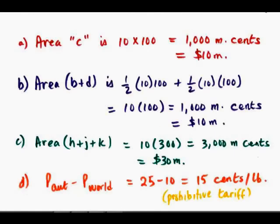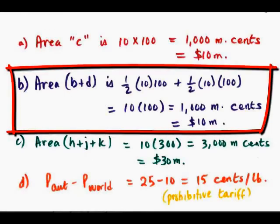We can calculate the areas B and D because they're triangles. The height of the triangle is 10. The base of the triangle is 100. So one-half of 10 times 100 is one-half of 1,000, which is 500. Again, the dimensions are millions of cents. Likewise, area D, height is 10, base is 100. So again, it's 500 million cents. So the social welfare costs would be 1,000 million cents or $10 million.